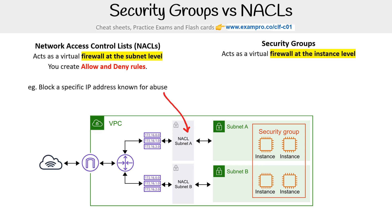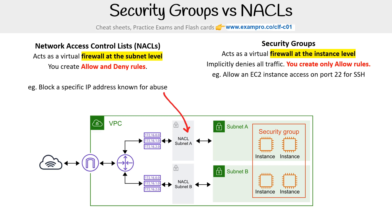Security groups act as a firewall at the instance level, and they implicitly deny all traffic, so you create only allow rules. For example, you can allow an EC2 instance to access port 22 for SSH, but you cannot block a single IP address. In order to block a single IP address with a security group, you would literally have to allow everything except that IP address, and that's just not feasible.